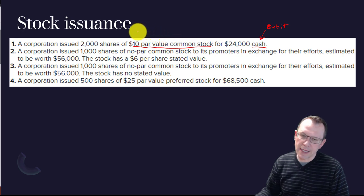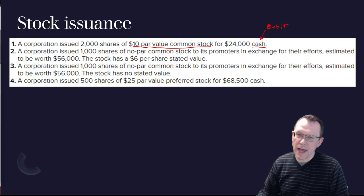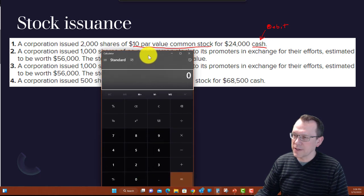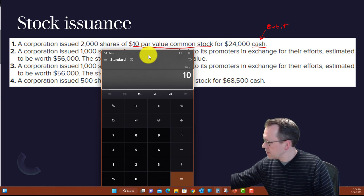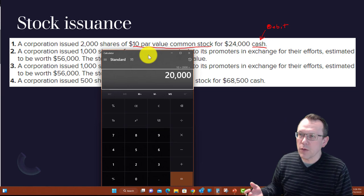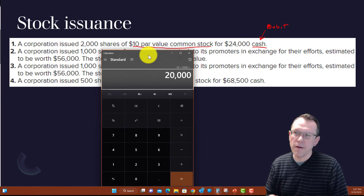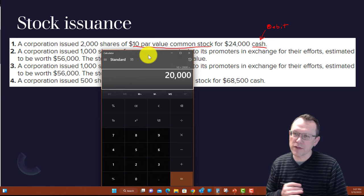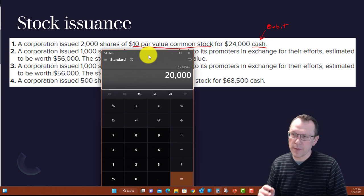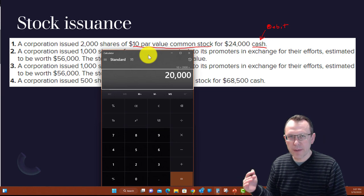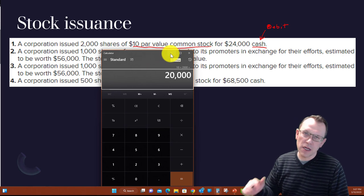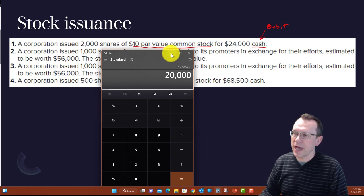We want to look at those accounts and do some quick math. $10 per share times 2,000 shares is $20,000, which is not equal to the $25,000 cash we received. So the credit for our $10 par value common stock will be $20,000, and the extra $5,000 goes to paid-in capital in excess of par — common stock. The paid-in capital in excess account takes the extra amount received over and above par or stated value.